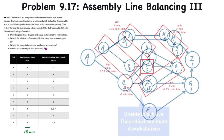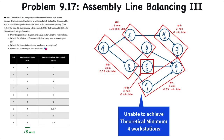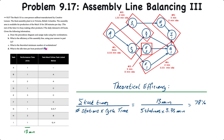As you can see, with five workstations we have been unable to achieve the theoretical minimum of four workstations. The formula for theoretical efficiency is the sum of the task times divided by the number of actual workstations times the cycle time. We have a 13-minute sum of task times, divided by five workstations times 3.33 minutes, which gives us 78% theoretical efficiency.